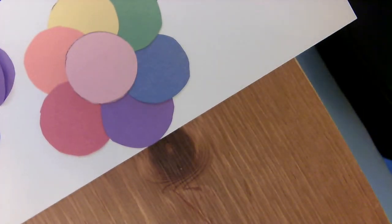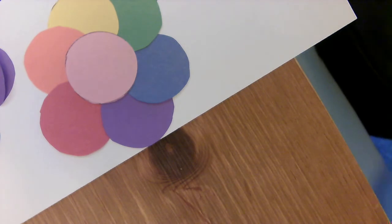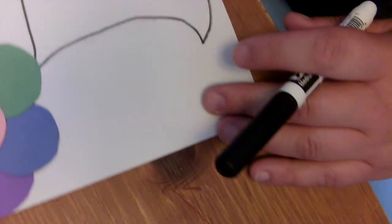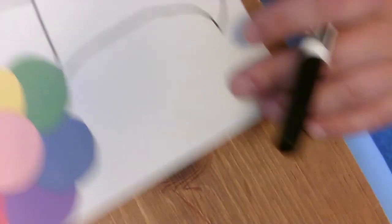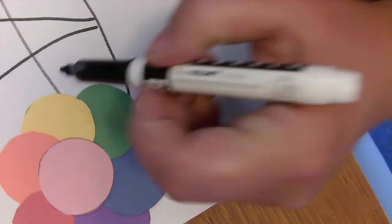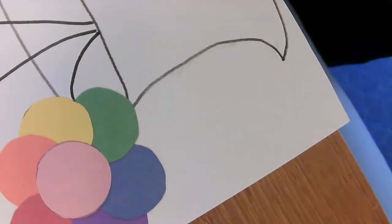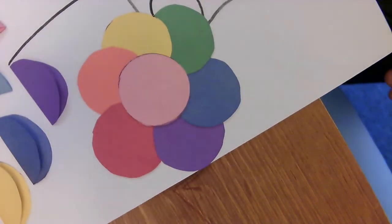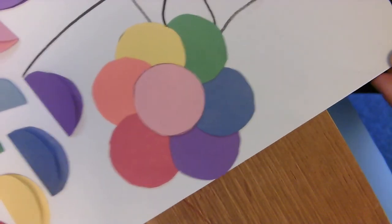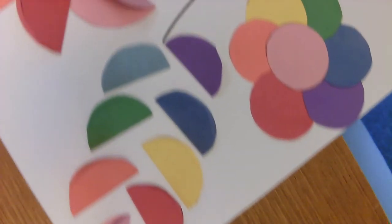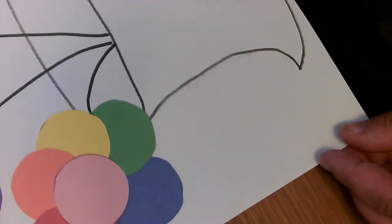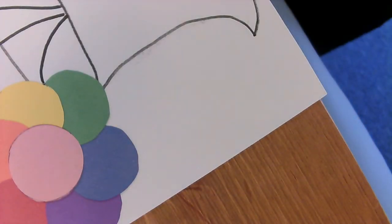And once you have your flowers all laid out on your paper, how you want them laid out, you can draw yourself a vase. And don't forget to add the stems to your flowers, and you can put as many flowers on your paper as you want to. All different shapes, all different colors, all different sizes, it's as creative as you want it to be.